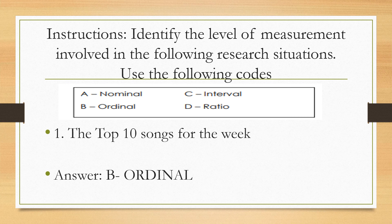Let's try this exercise. Identify the level of measurement in the following research situations using the codes: nominal, ordinal, interval, and ratio. Number 1: the top 10 songs for the week — it is ordinal, because the songs are ranked from 1 to 10. We determine which song is top 1, top 2, top 3, and so on. It has an order, so it is ordinal.